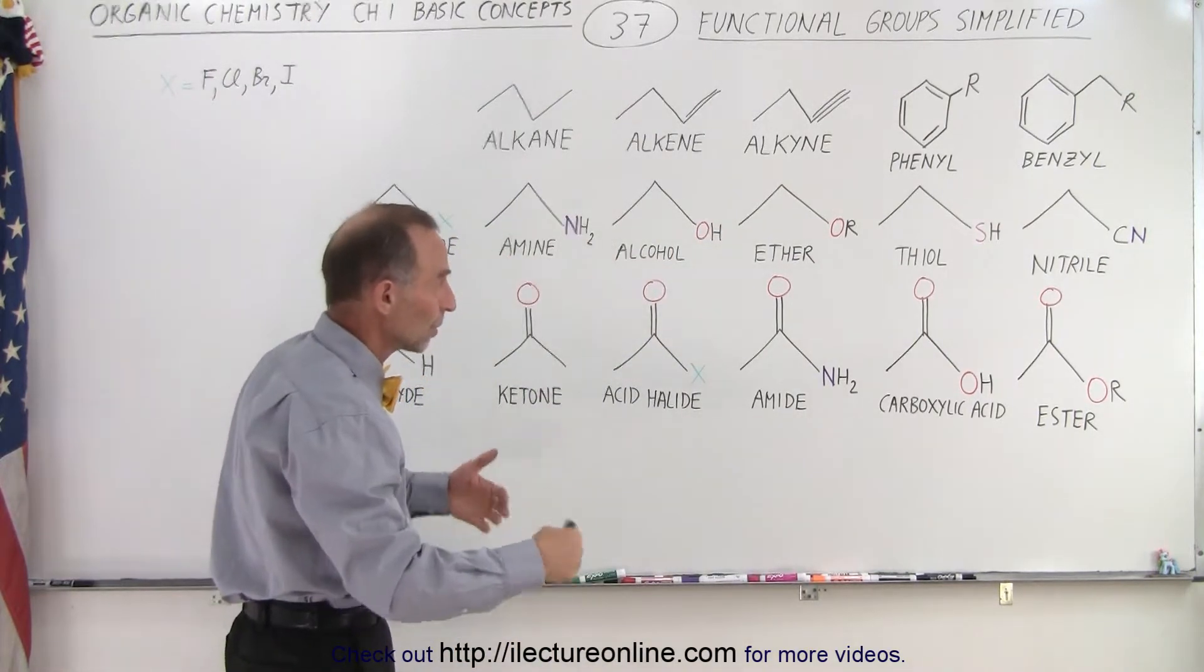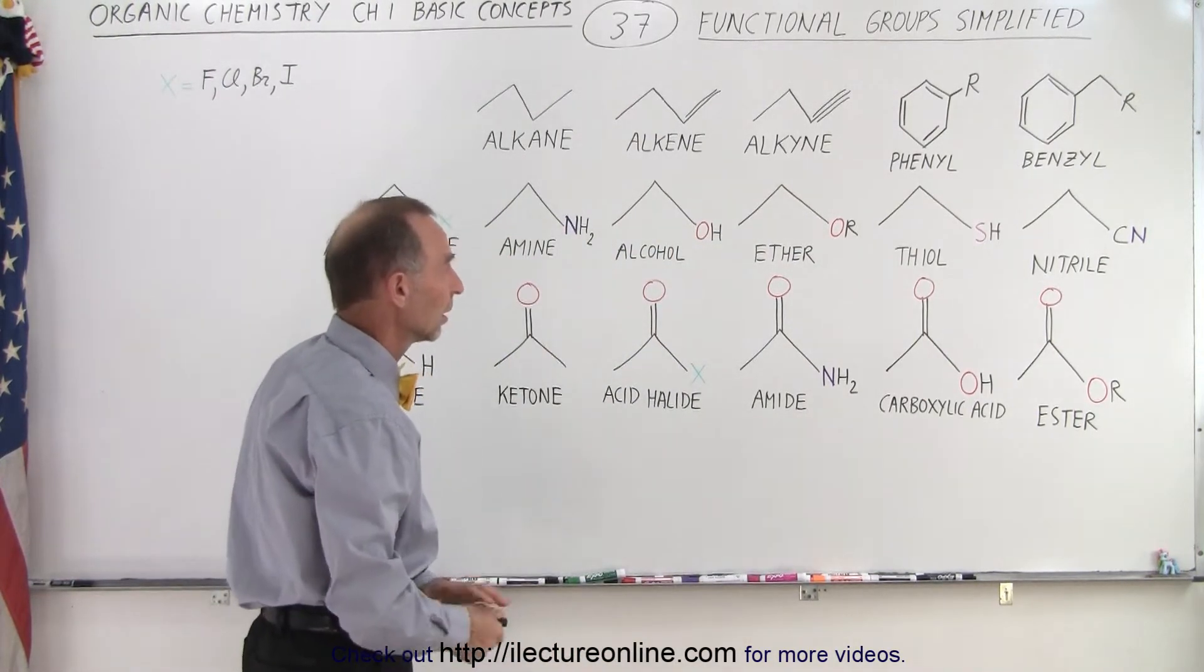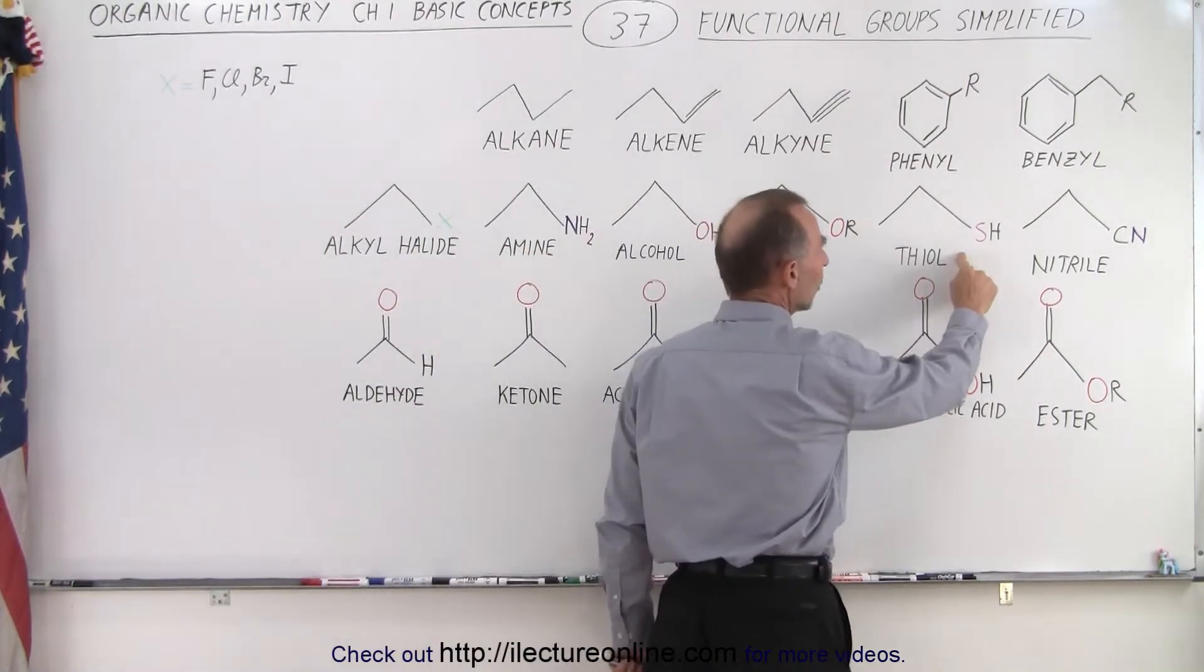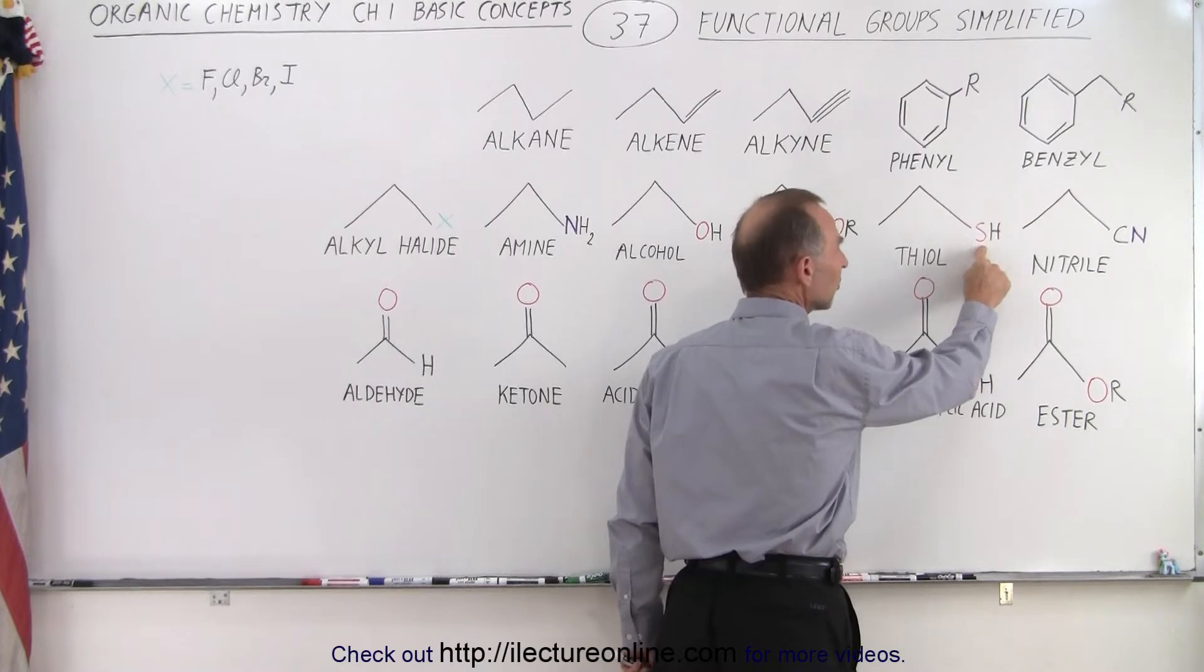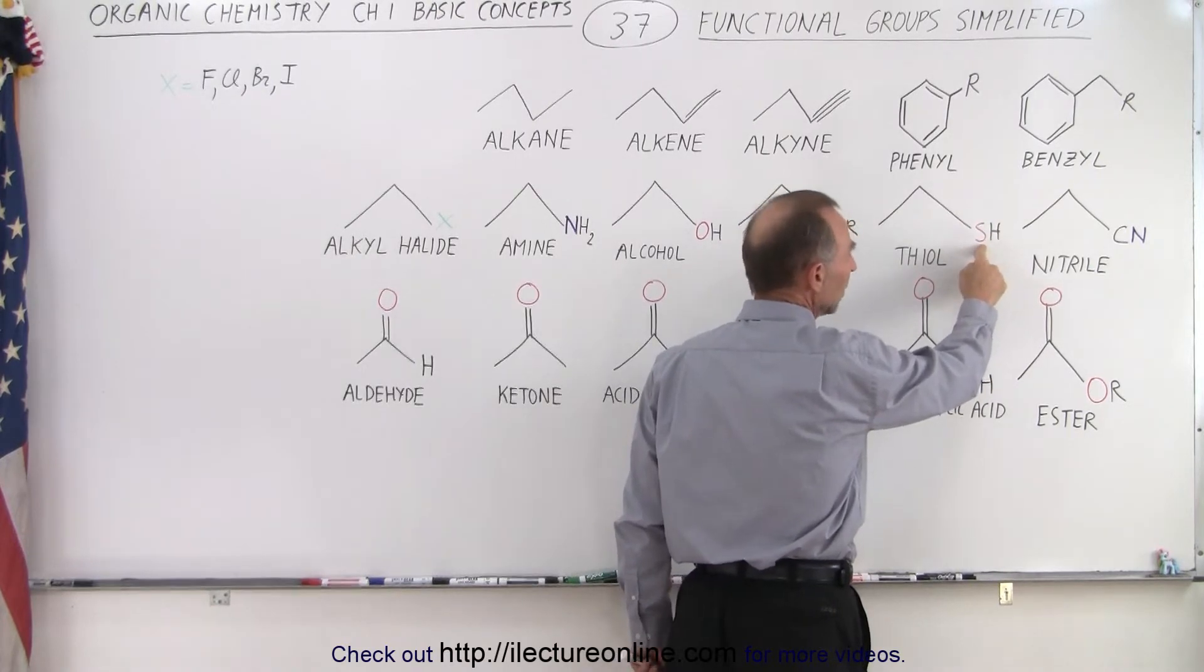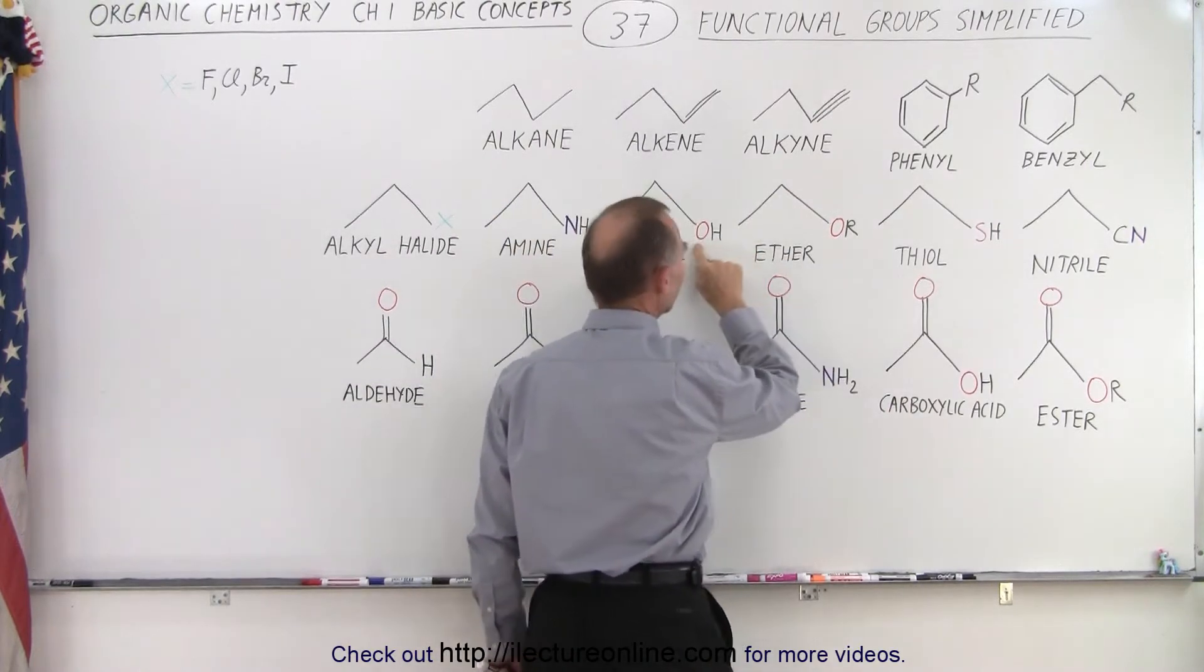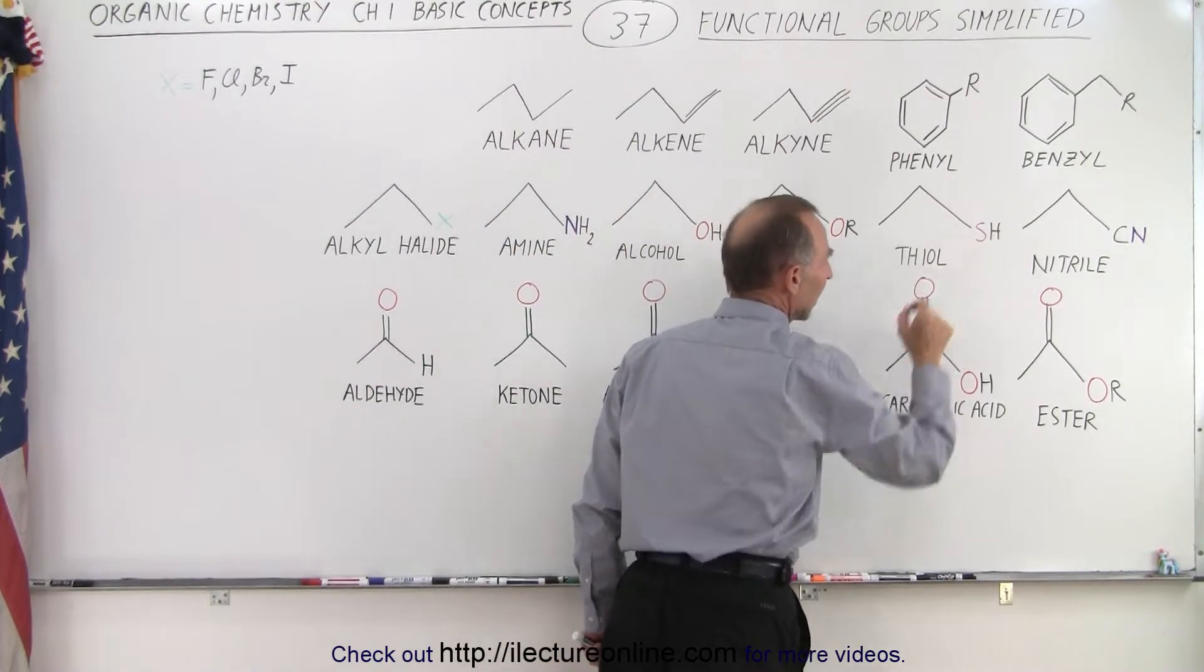Could be anywhere from one to two, three or as many carbons as you need on the other side. Then we have something we haven't talked about yet, the thiols, which have sulfur instead of oxygen or nitrogen. So we have sulfur and hydrogen. This looks very much like an alcohol except instead of an oxygen we have a sulfur atom.